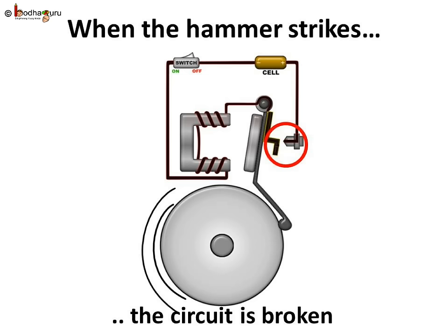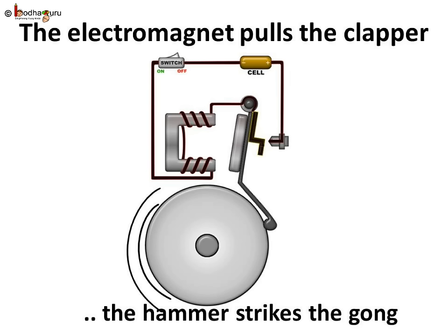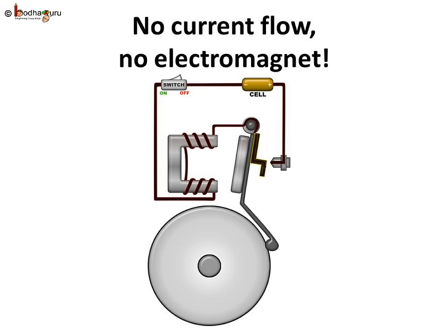So, what will happen next? The current through the coil will stop flowing. Will the coil remain an electromagnet? No, it wouldn't.